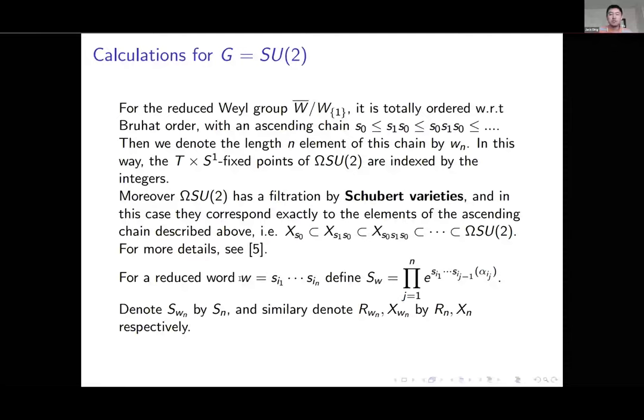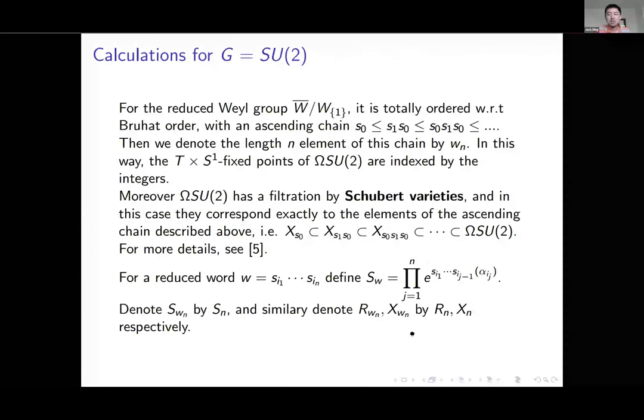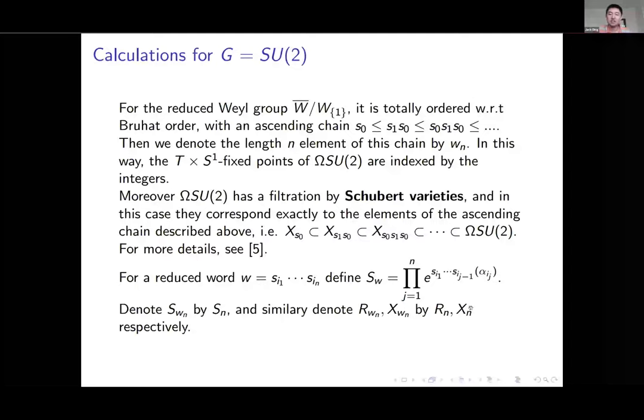For any reduced word, by reduced I mean there are no subwords that are equal to this, we can define this sort of weird looking quantity S_w. This is just sort of bookkeeping notation to write a nice theorem at the end. We're going to denote S_{w_n} by S_n for simplicity. Remember the rational functions from earlier. For each w_n there is a rational function and we're going to call that R_n for simplicity, and for each w_n there's a Schubert variety, we'll call that X_n for simplicity.